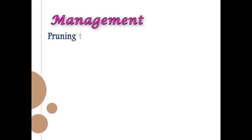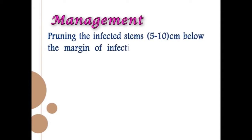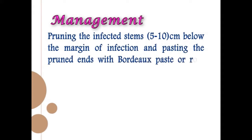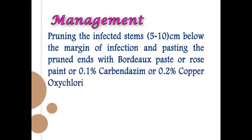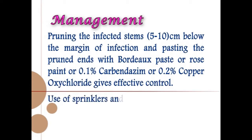The fungus persists in dead twigs and the stalks of withered blooms. For management, prune infected stems 5 to 10 cm below the margin of infection and paste the pruned ends with Bordeaux paste, rose paint, 0.1% carbendazim, or 0.2% copper oxychloride. Use of sprinklers and mist sprayers may enhance the spread of the disease.